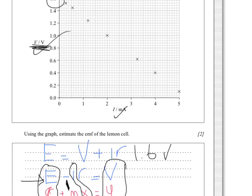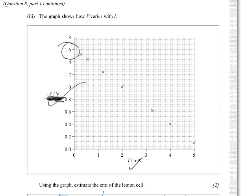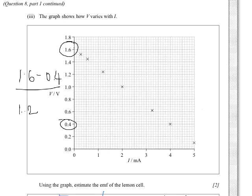Next question asks for the gradient, because it asks for the internal resistance. So if we have a closer look, and the important thing here is to take two easy-to-read and simple read-offs. So I think 1.6 and 0.4 would be good points, because then we would have 1.6 minus 0.4, which gives us 1.2. So that's our rise. And bear in mind that it's decreasing, so it's negative.